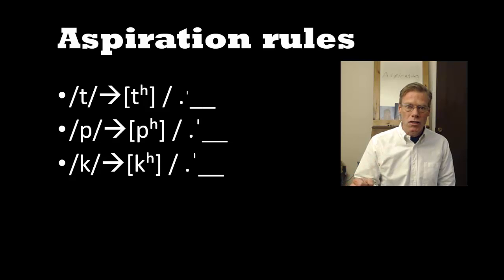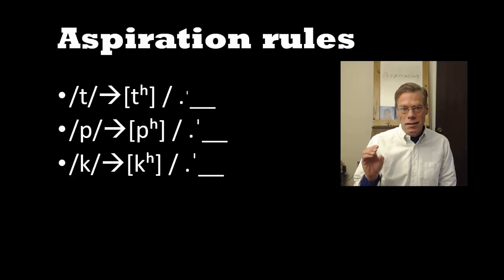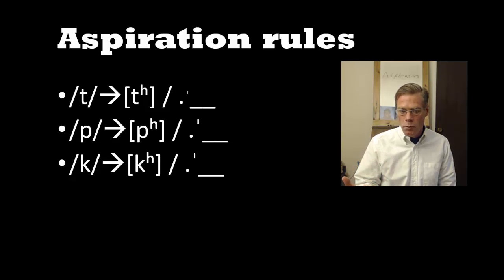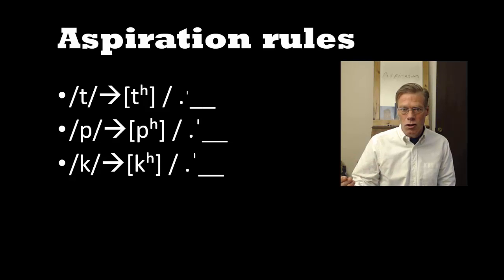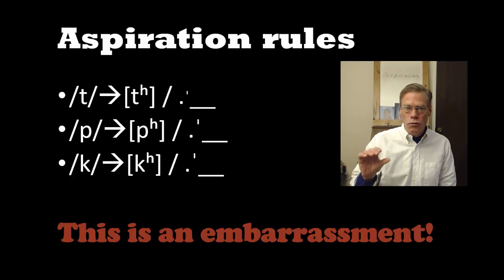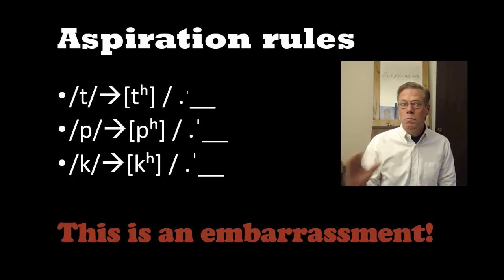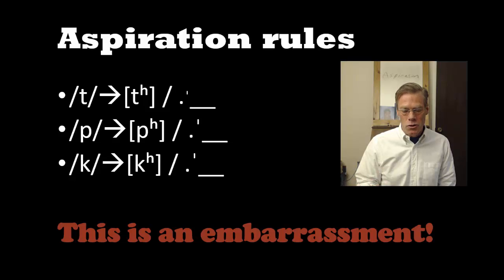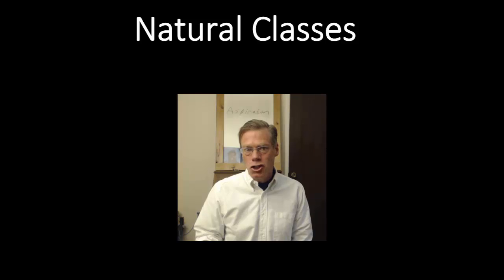I hinted at this in a previous video where I looked at aspiration on T's in English. But we also find aspiration on P's and K's, and moreover, it happens in the same environment. A T gets aspirated when it's at the beginning of a stressed syllable. A P gets aspirated when it's at the beginning of a stressed syllable. A K gets aspirated when it's at the beginning of a stressed syllable. Having three rules to account for what seems to be a single phenomenon is an embarrassment. When we see a pattern like that, we look to see how we can generalize.